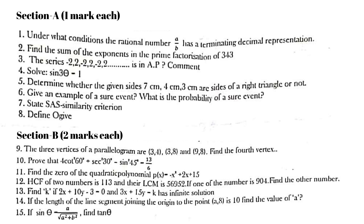Then determine whether the given sides 7 cm, 7 cm, 4 cm, 3 cm are sides of a right angle triangle or not. Then give an example of a sure event. What is the probability of a sure event? Then state the SAS similarity criterion. Define Uzzi.